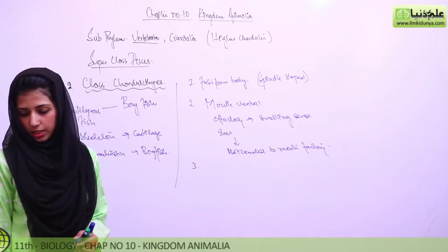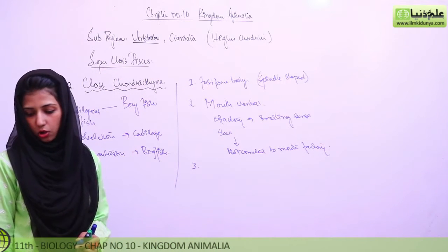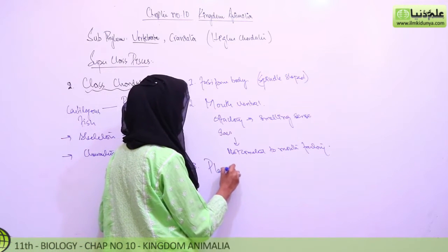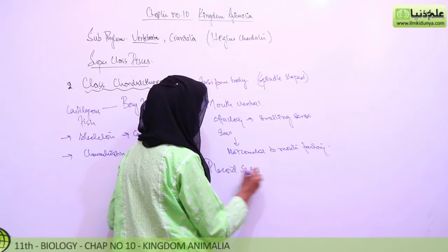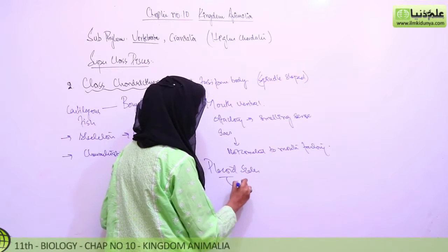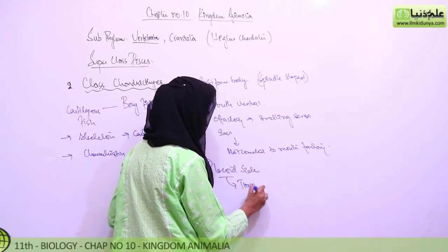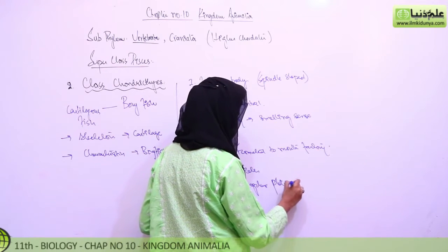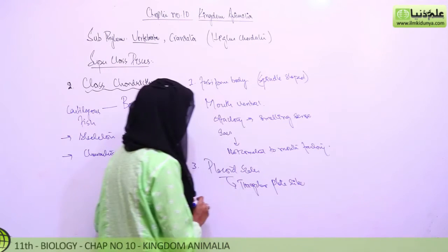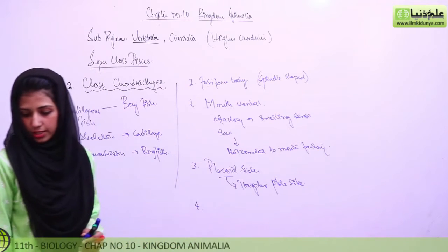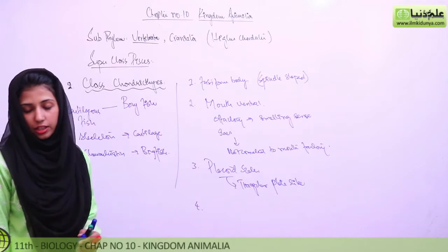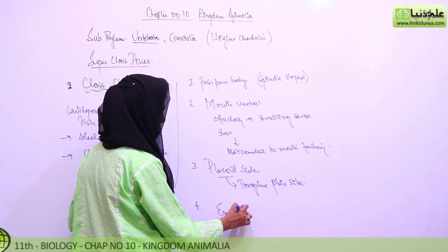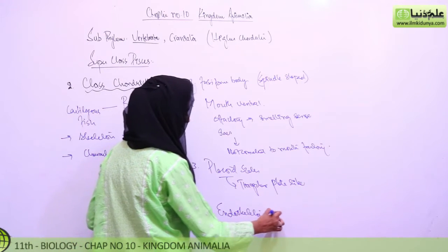Third characteristic: placoid scales on the body. Placoid means triangular, plate-like scales on the body. Fourth: the endoskeleton is entirely cartilaginous — the body skeleton is entirely made up of cartilage.